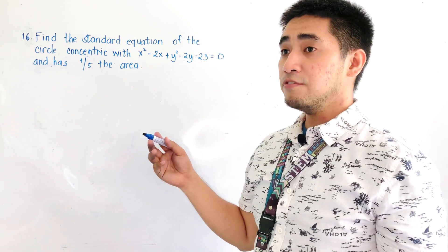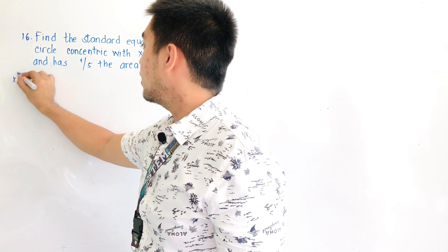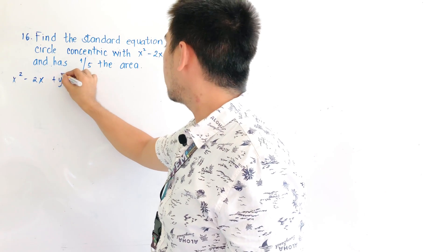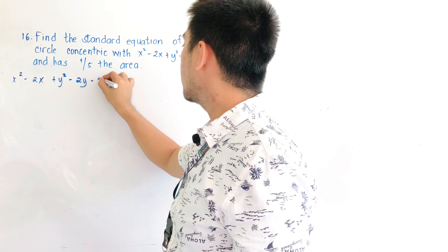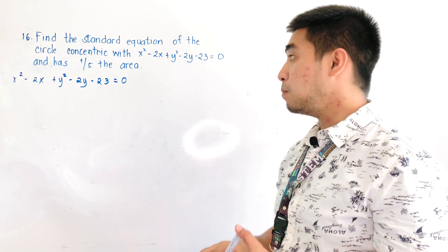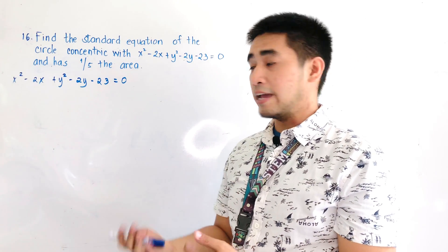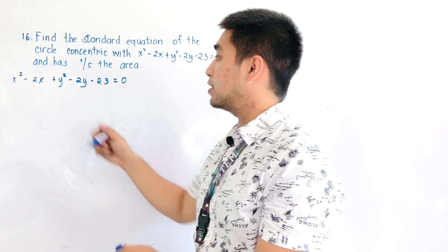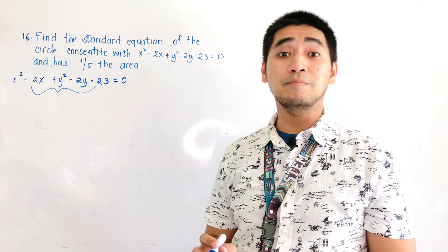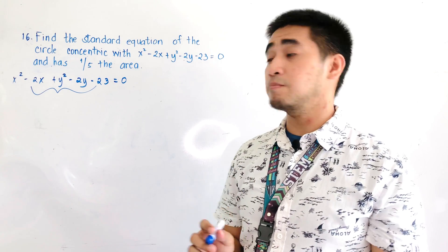What we have to do is write the equation first: x squared minus 2x plus y squared minus 2y minus 23 equals 0. Based on the problem, the circle we need to find is concentric with this one, meaning they share the same center. When we say concentric, they share the same center.